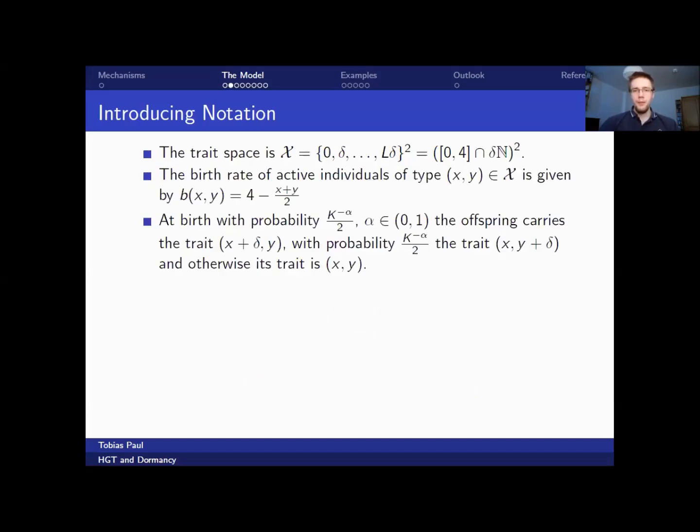An individual of trait (X,Y) will give birth to another individual at rate (4 - X + Y)/2. So there is a trade-off between the strength of dormancy and the strength of horizontal gene transfer and the ability to reproduce. At birth, we have mutations, which are directed mutations. The mutations occur with probability K to the minus alpha. And then again, with probability one-half, the mutation is beneficial in the first component or the mutation is beneficial in the second component. Otherwise, if there is no mutation, then the trait is the same as the parental trait.